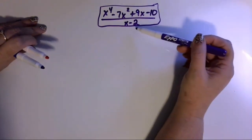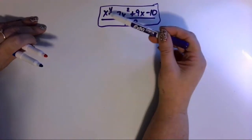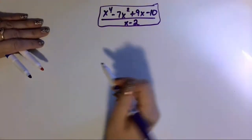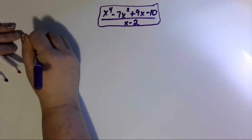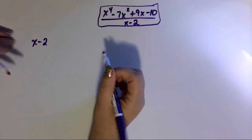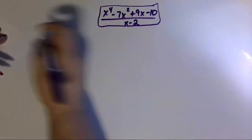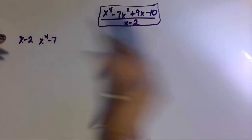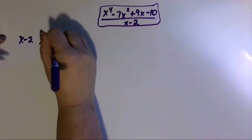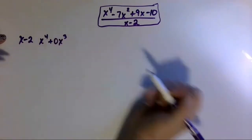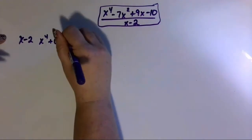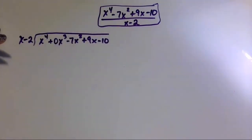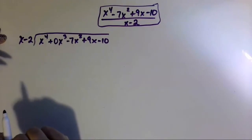If I want to divide the linear binomial x minus 2 into the polynomial x to the fourth minus 2x squared plus 9x minus 11, we learned in our last lesson how to do that using polynomial long division. So my divisor would go out front — x minus 2 — and then the dividend would go under the division bar. I put in a 0 for my missing cubic term as a placeholder.